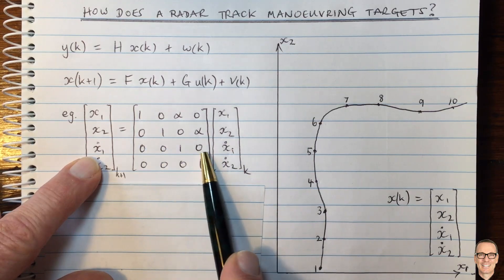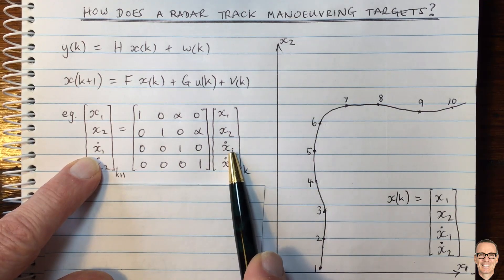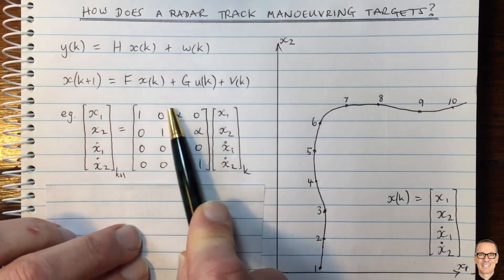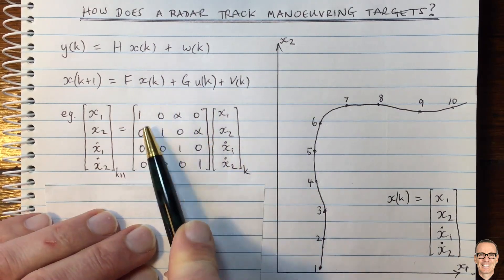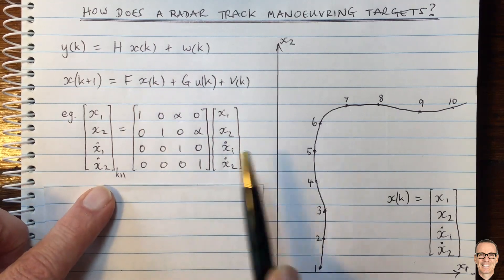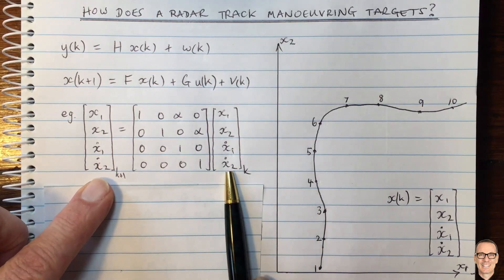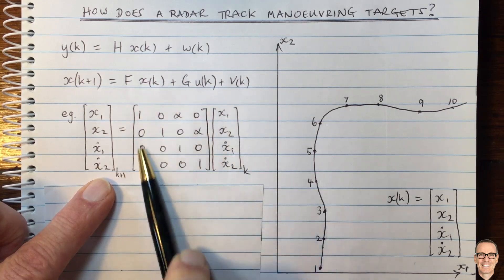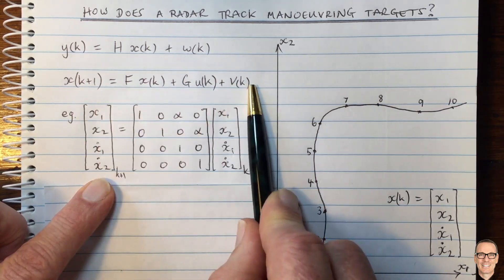And the velocities in this example stay the same. So x1 velocity is this times this, which gives 1 times the current velocity in x1 and the same for x2. So this choice of F would correspond to a target that is moving exactly in a straight line. So this hopefully gives you more intuition about this state space representation.